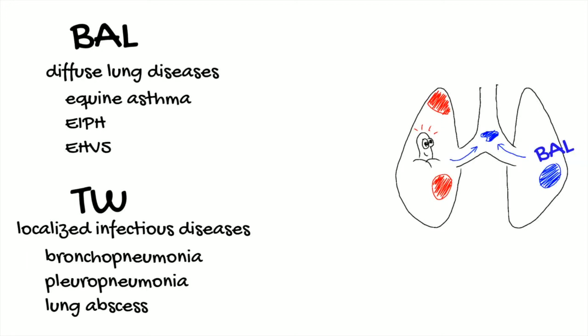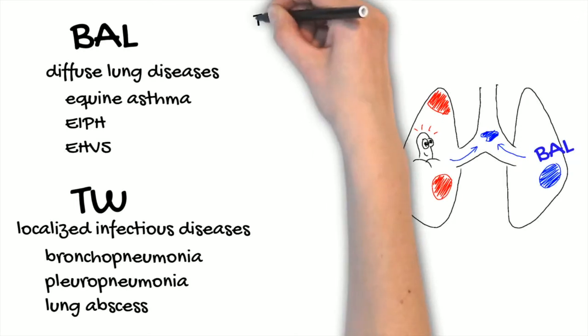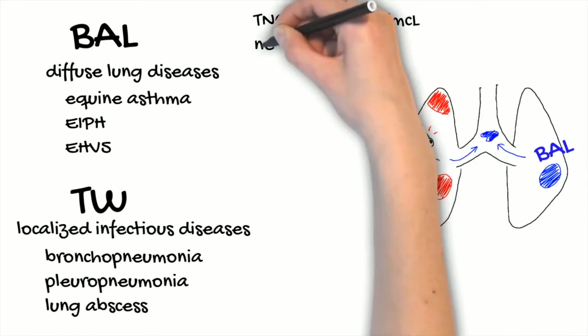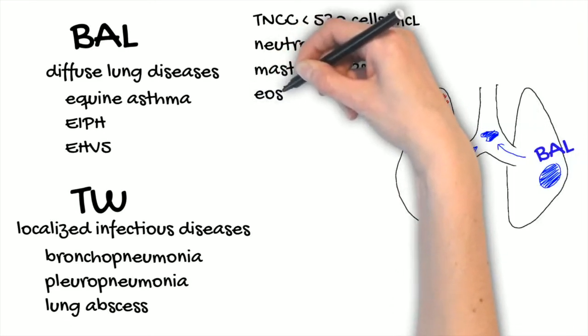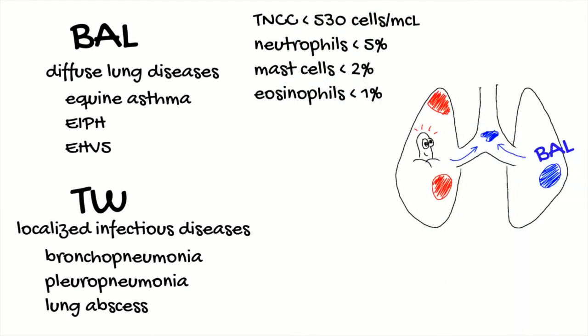Now we are going to see what is normal to find on cytologic examination of a BAL and a TW. Bronchoalveolar fluid consists of a mixture of pulmonary macrophages and lymphocytes. The total nucleated cell count should be less than 530 cells per microliter, with less than 5% of neutrophils, less than 2% of mast cells, and less than 1% of eosinophils. Increased percentages of these inflammatory cells have been associated with poor performance and mild, moderate, or severe asthma.